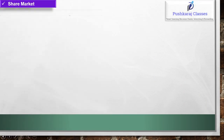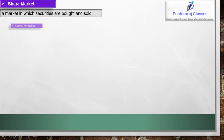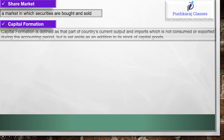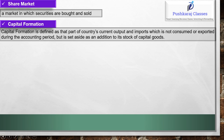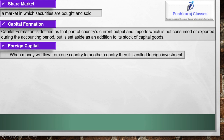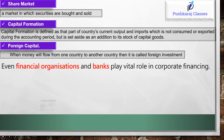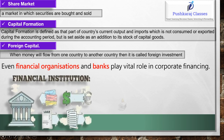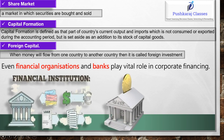4. Share market: A market in which securities are bought and sold. 5. Capital formation: Capital formation is defined as that part of a country's current output and imports which is not consumed or exported during the accounting period but is set aside as an addition to its stock of capital goods. 6. Foreign capital: When money flows from one country to another country, it is called foreign investment. Financial organizations and banks also play a vital role in corporate financing.